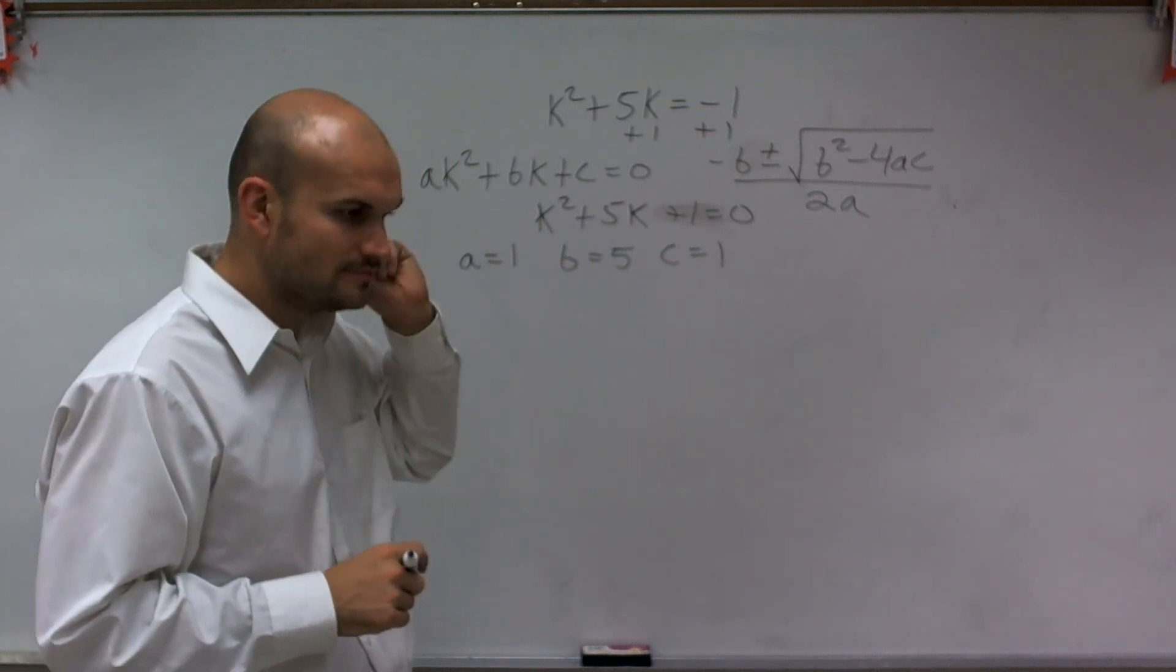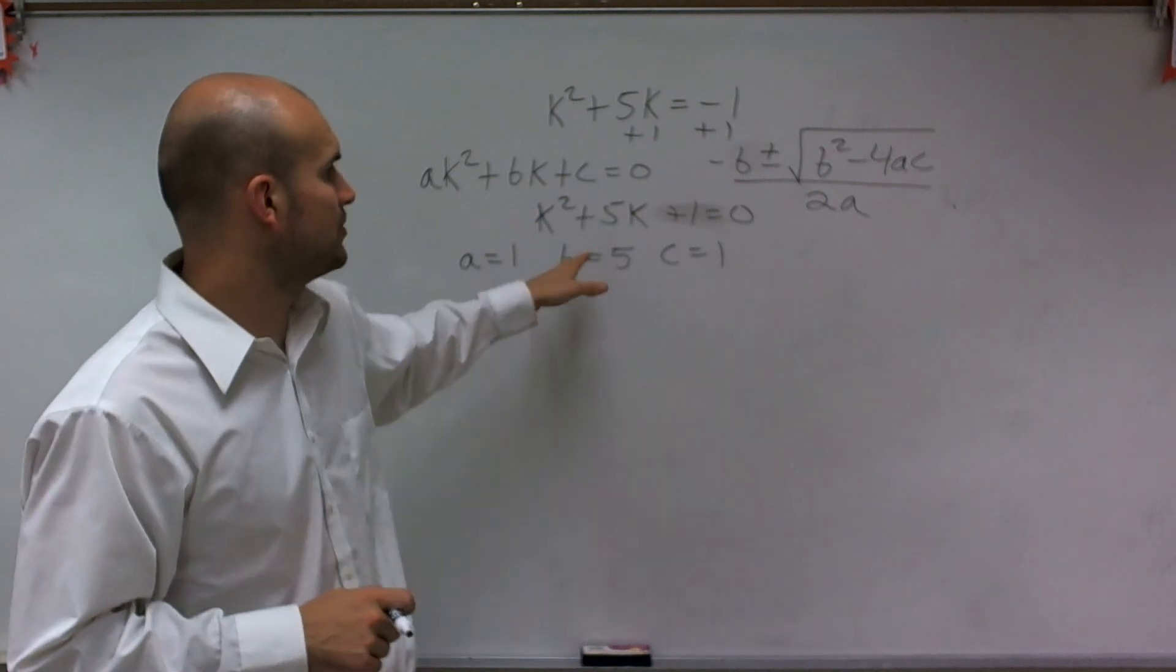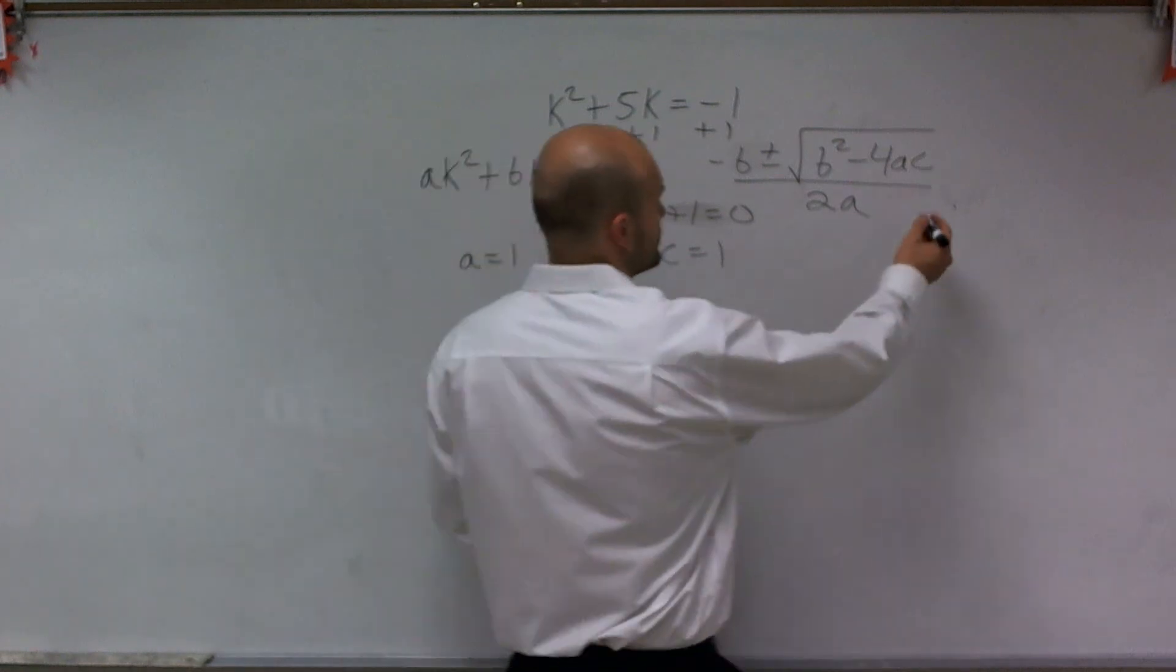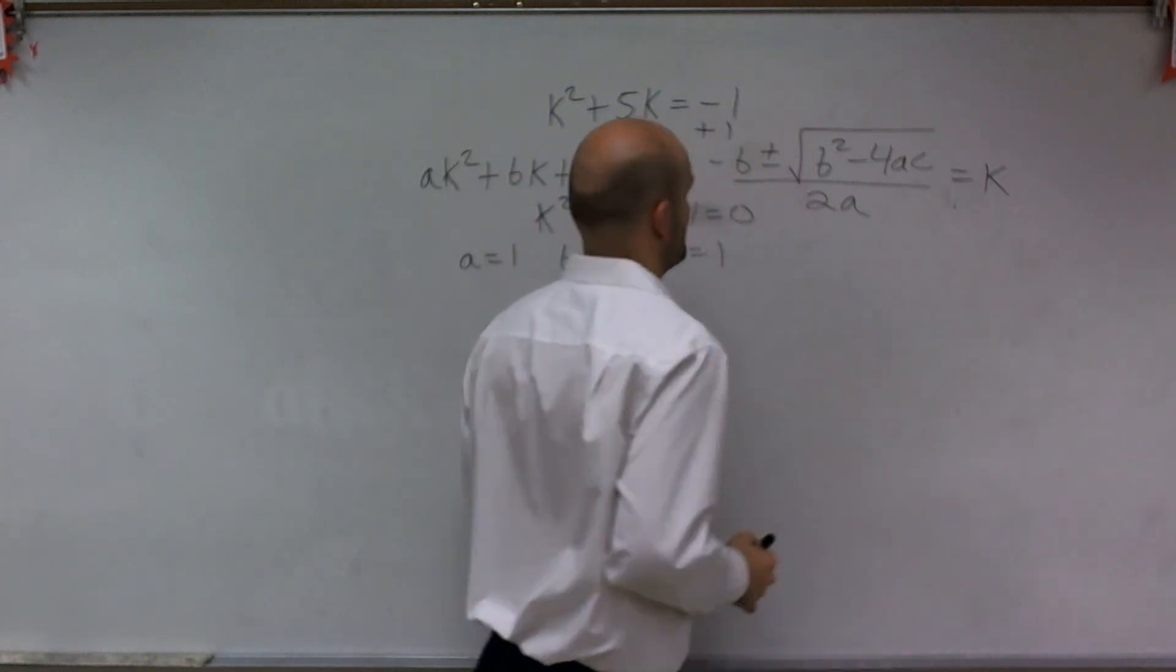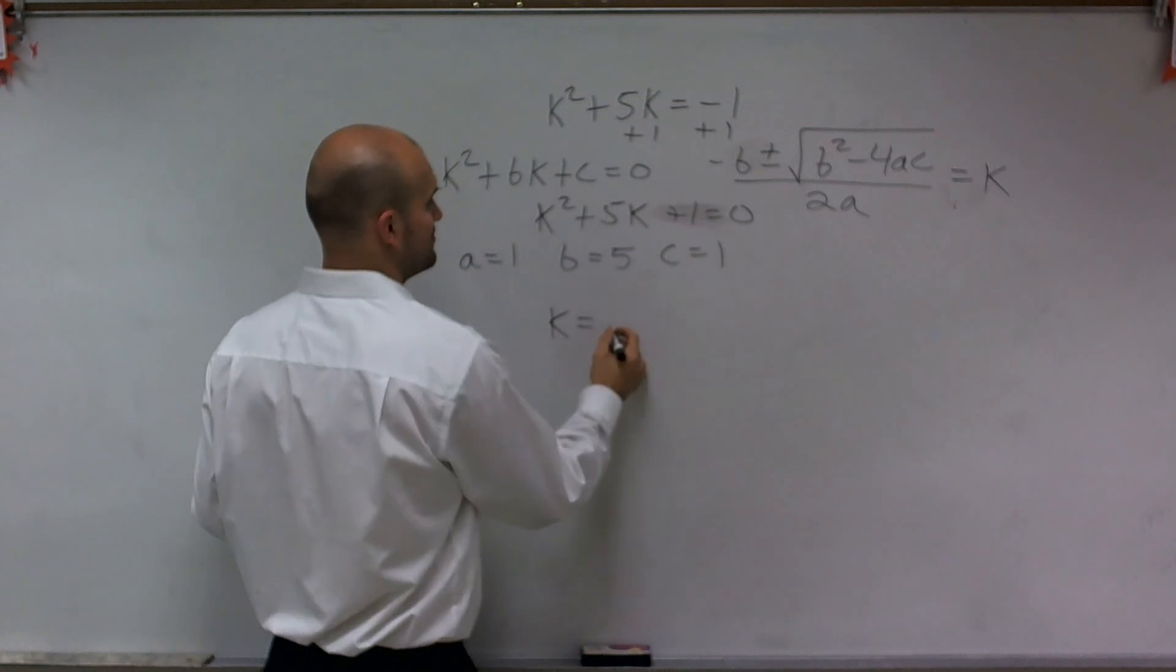So to do the rest of these problems, what I'll do is I need to plug in a, b, and c in for my formula. Now the quadratic formula equals your variable k. So I'm actually going to write that in front. I'm going to k equals opposite of b,